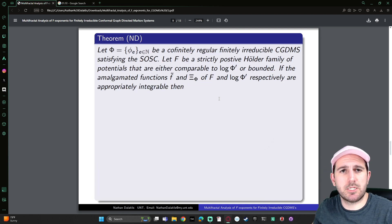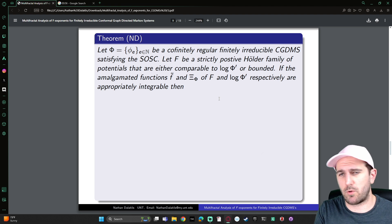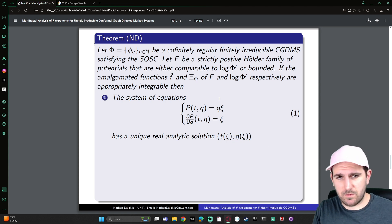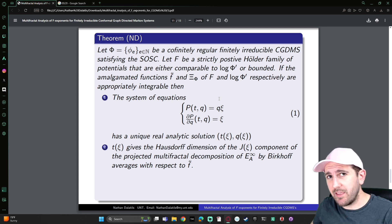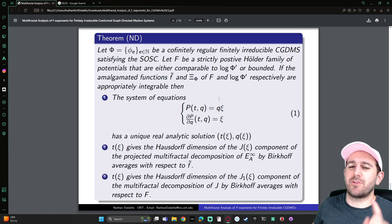And my main theorem of my dissertation is that, well, if you have a cofinally regular, finitely irreducible conformal graph-directed Markov system satisfying the strong open set condition, and F a strictly positive Holder family of potentials that are either comparable in some sense to log of the derivatives of the map in your conformal graph-directed Markov system, or bounded, and if the amalgamated functions of those two families are appropriately integrable, then you can find real analytic solutions to this system of equations analogous to the Vaughn case, and the T-function that is spit out from that process is the Hausdorff dimension of the projected version of the decomposition. And the cool thing is that the T-function is also the Hausdorff dimension of when you look at the limit set itself and just remove non-unique coding points.